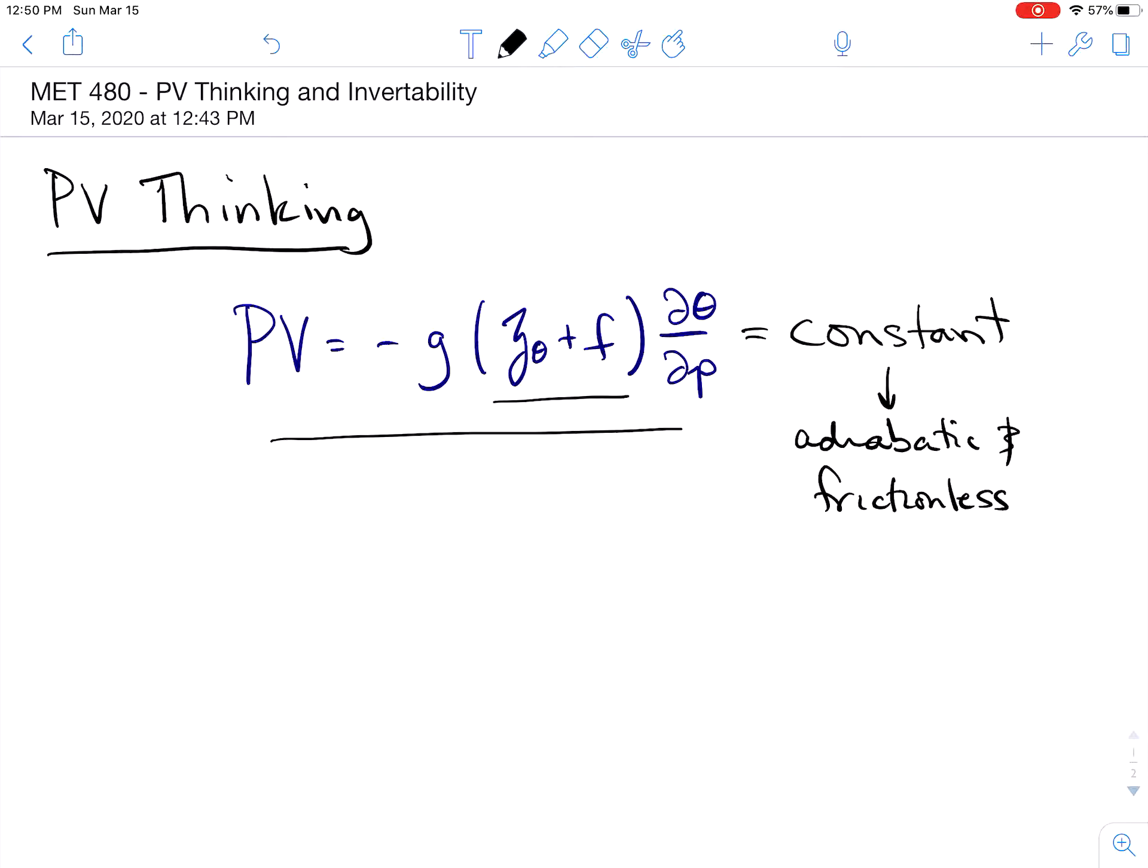And so this is the essence of what we call PV thinking. PV thinking, two primary characteristics are: one, that PV is conserved for adiabatic frictionless flows, which is generally true in the upper parts of the atmosphere.